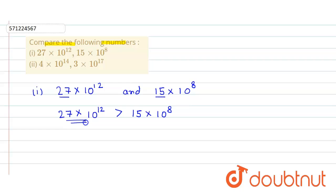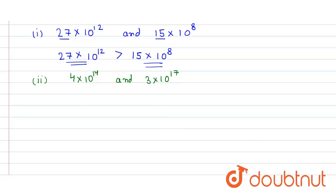Similarly in the second part we have to compare 4 into 10 raised to power 14 and 3 into 10 raised to power 17. Here similarly these two numbers are very small in comparison to 10 raised to power 14 and 10 raised to power 17.